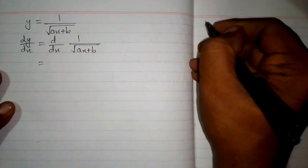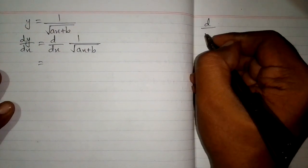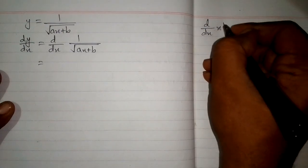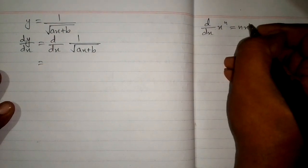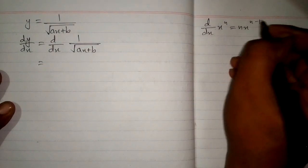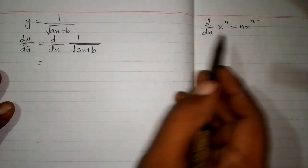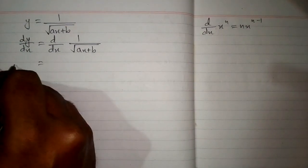Now, we have the formula d by dx of x to the power n is equal to n times x to the power n minus 1. But we cannot apply this formula over here directly.